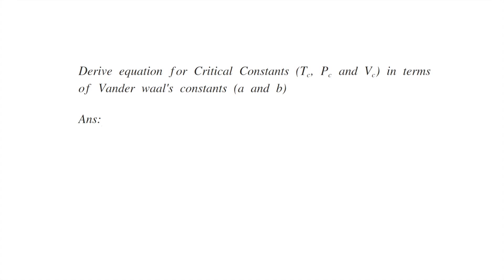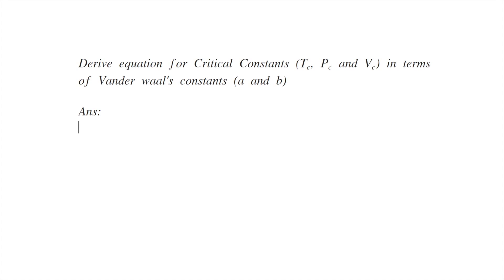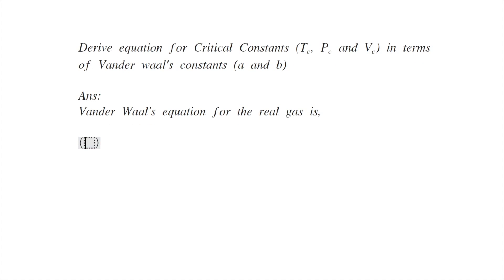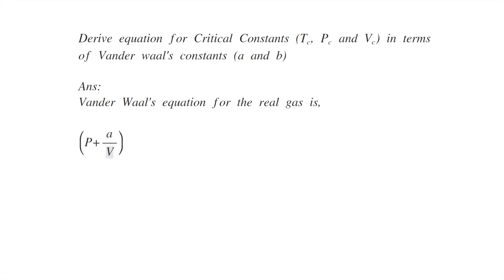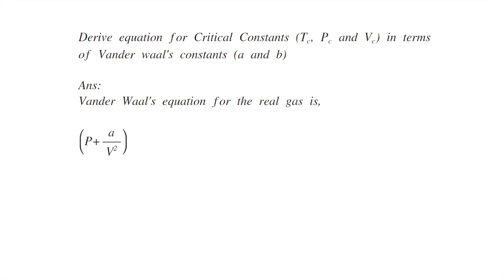Derive an equation for critical constants: critical temperature, critical pressure, and critical volume in terms of van der Waals constants a and b. First of all, the van der Waals equation for a real gas is (p + a/v²)(v - b) = RT.